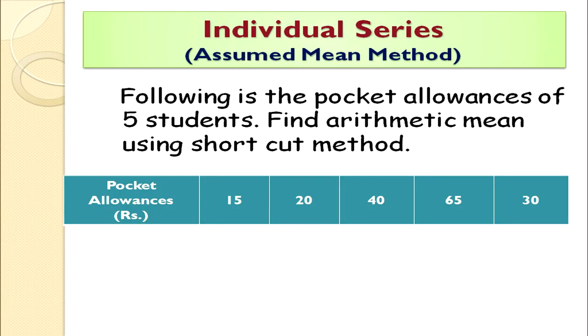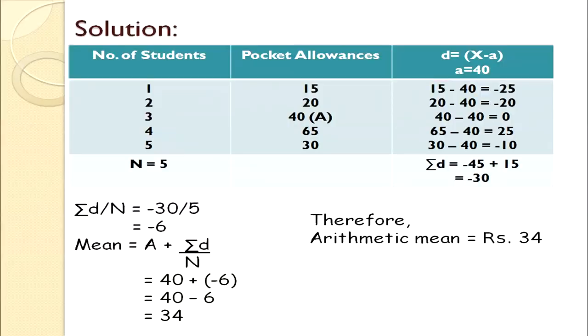Example: the following are the pocket allowances of five students — find the arithmetic mean using the shortcut method. The pocket allowances given are 15, 20, 40, 65, and 30. There are five students total. We mark 40 as the assumed average A because it is the middlemost value. The next step is to calculate deviations from each item value.